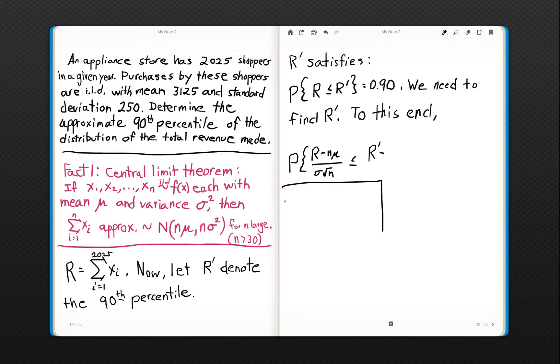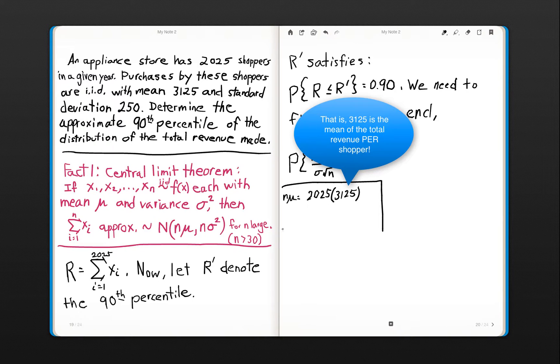Before we write this quantity out, let me do a little bit of scratch work. Let's compute what nμ is. n times μ equals, well, n is 2,025, that's the total number of shoppers that come in. Each, on average, spend $3,125. So that's the actual mean of the total revenue, which should make sense.